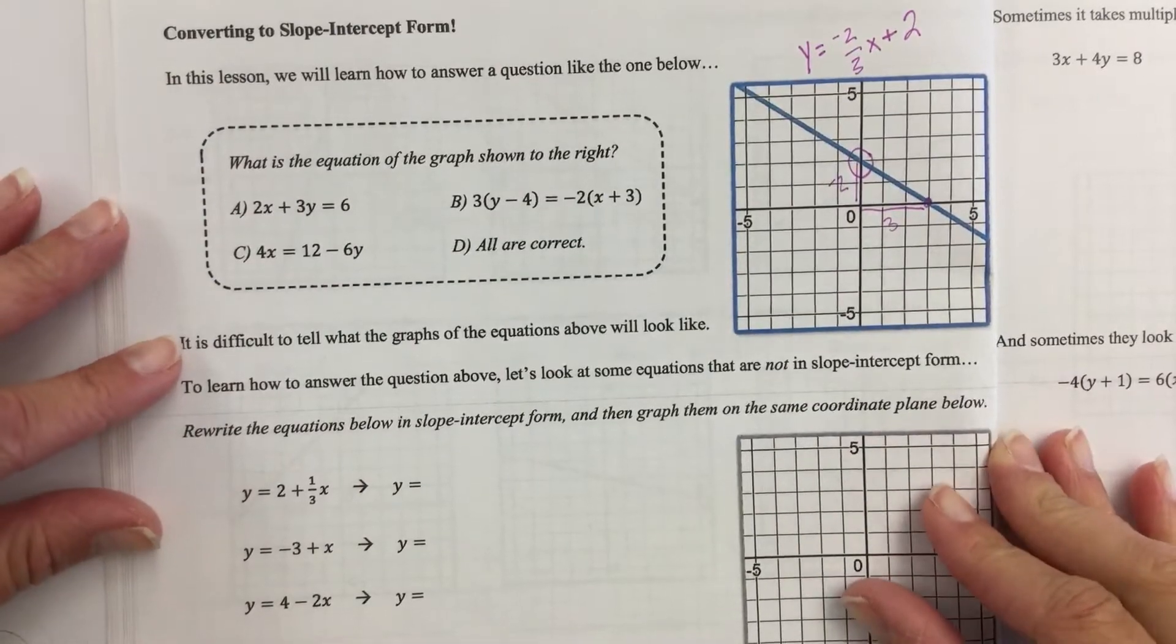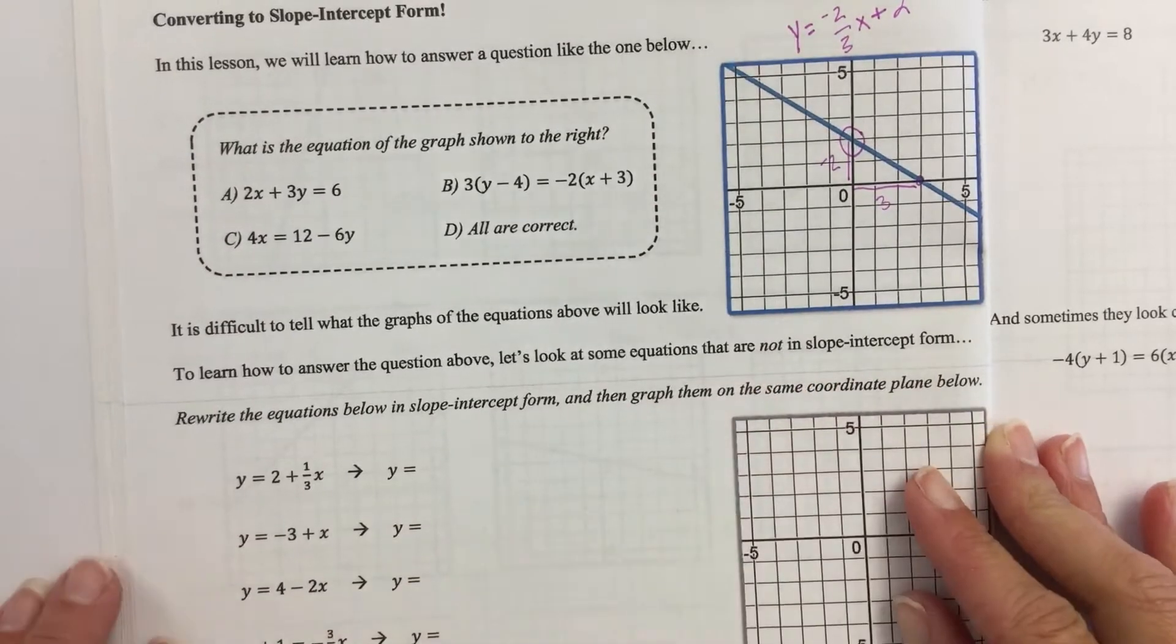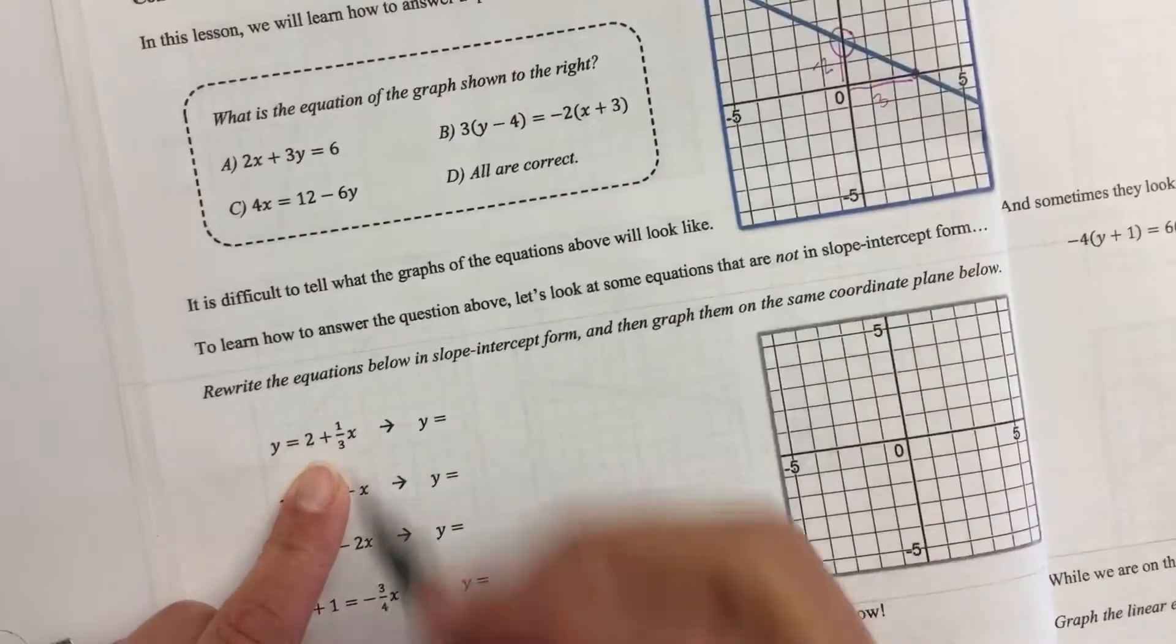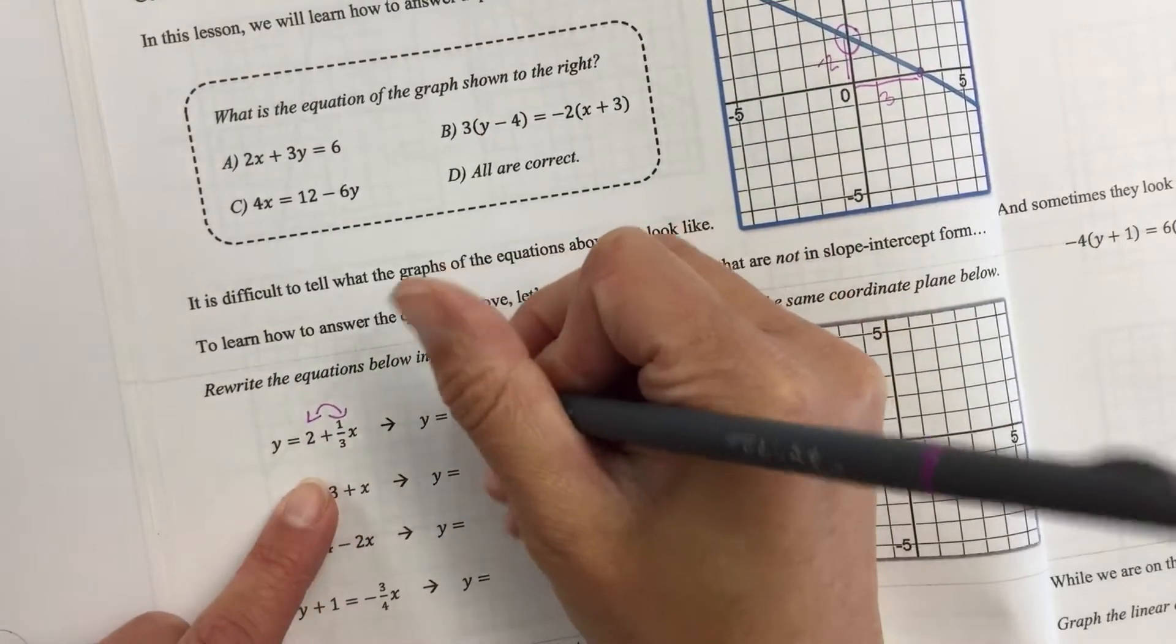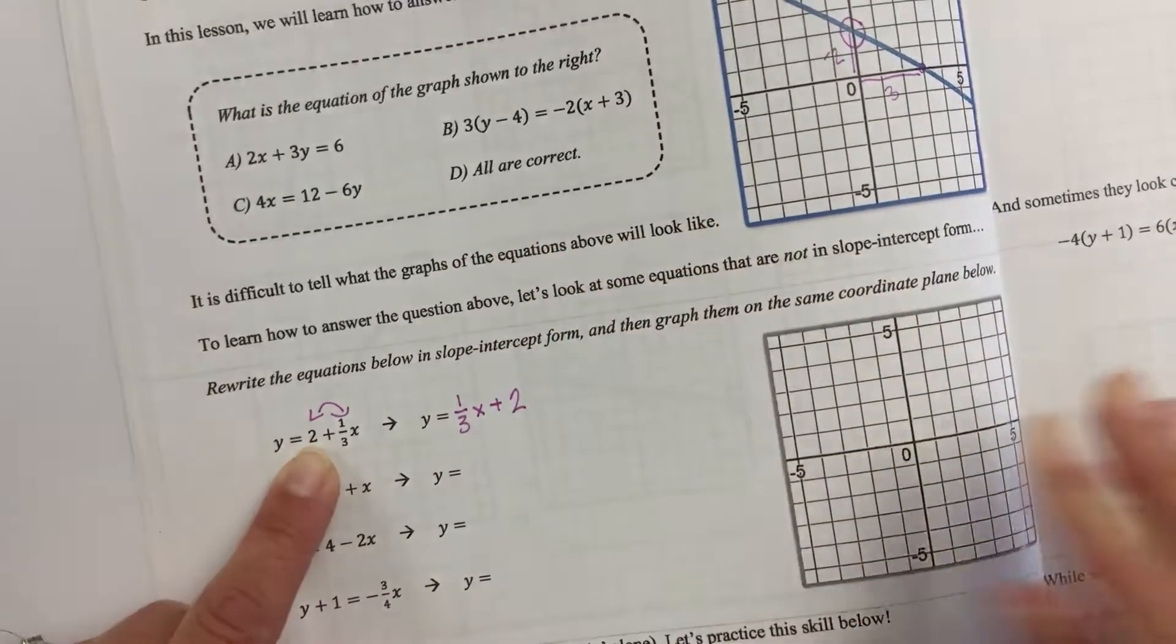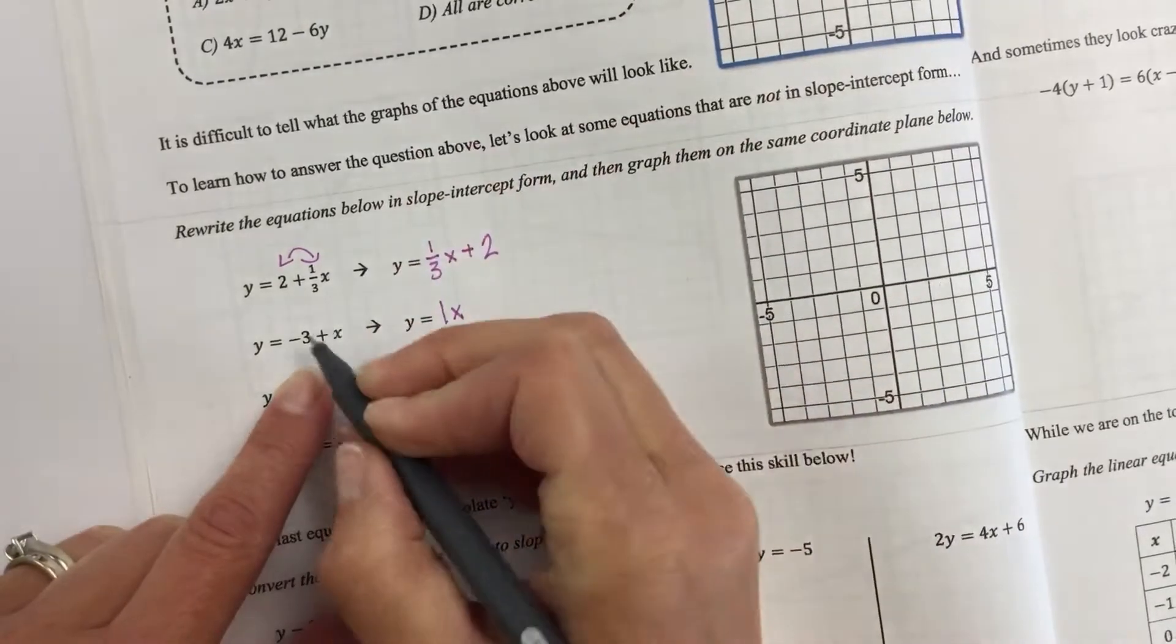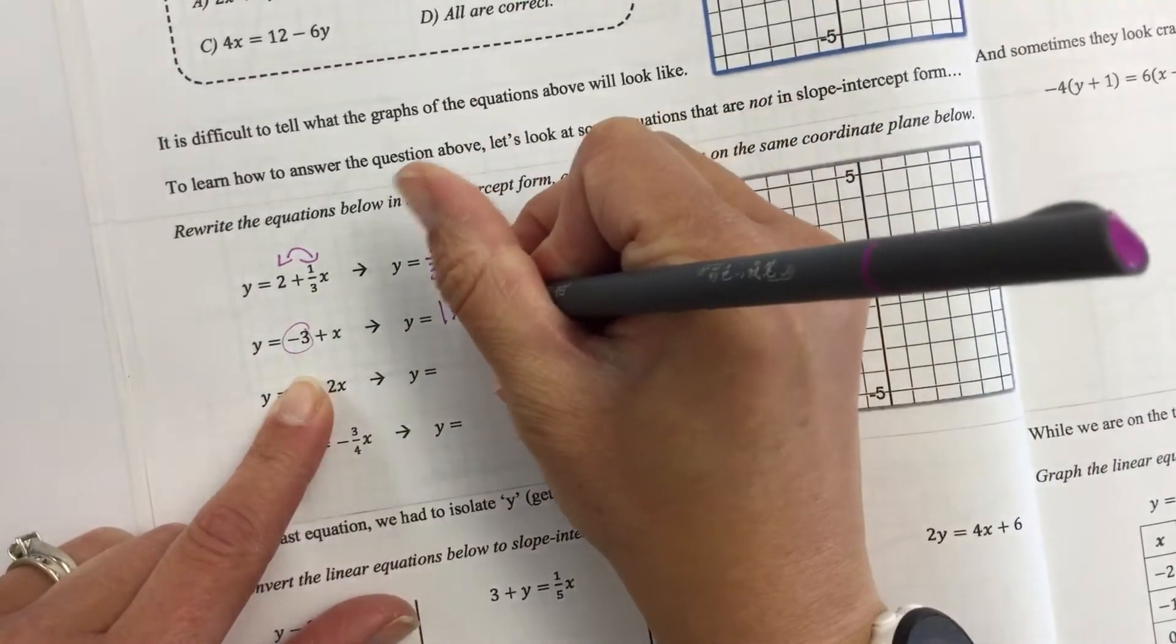So it says it's difficult to tell what the graphs of the equations will look like. To learn how to answer the question above, let's look at some equations that are not in slope-intercept form. Rewrite the equations below in slope-intercept form, then graph them on the same coordinate plane. For example, this one, the only thing we have to do is flip-flop these two terms in the equation. So I would write it y = 1/3x + 2. The next one, same type of thing, you might want to write a 1 in front of the x just to remind you. And then this is a negative 3, so instead of writing plus b, I'm just going to write y = x - 3.